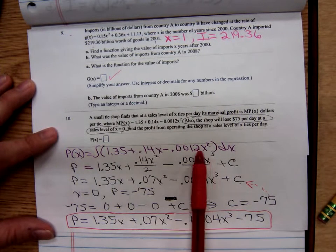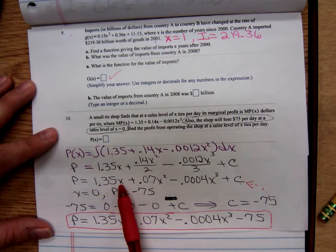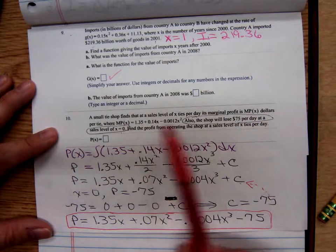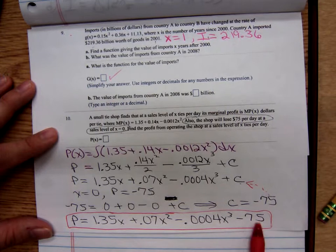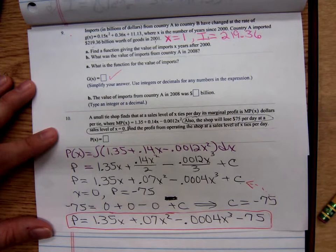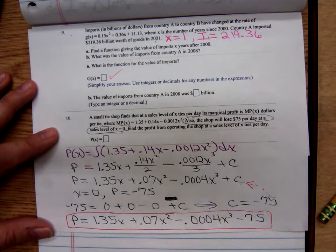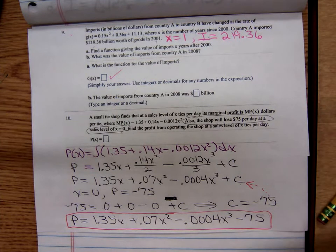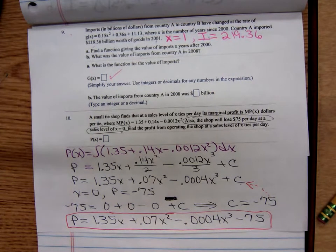Once again, we anti-differentiated the marginal profit function to find the profit function. But it contained that constant of integration. They then had to give us some additional information that we could plug in to find the exact value of C. And my constant of integration turned out to be a negative 75 in this case. So hopefully if you missed my in-class lecture over anti-derivatives or if you're in an online class, hopefully this helps you.